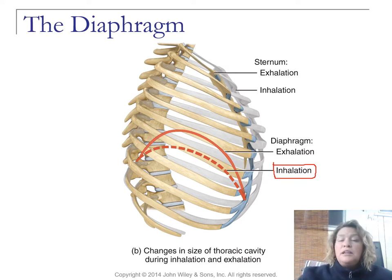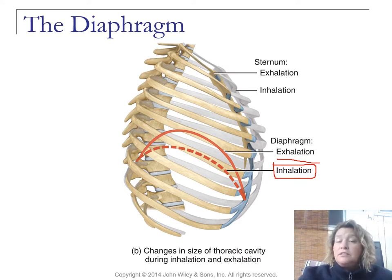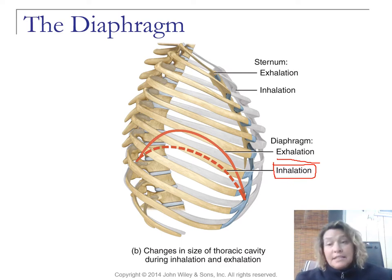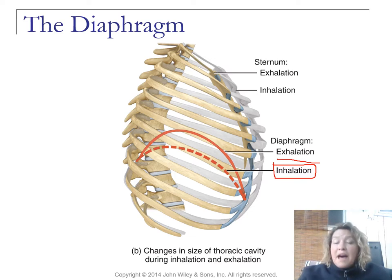Upon exhalation, you see this dome shape — the diaphragm is relaxing, and this causes decreased area for the lungs and therefore exhalation. The sternum is also involved. When you inhale, the sternum moves more anterior, and when you exhale, the sternum moves back to its normal position posteriorly.